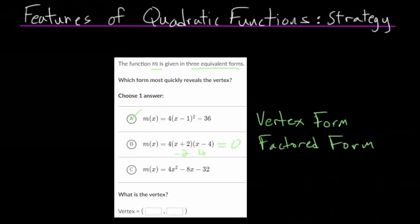So b would help you quickly find the roots or the zeros or the x-intercepts, whichever word you want to use, and then c, this is standard form.